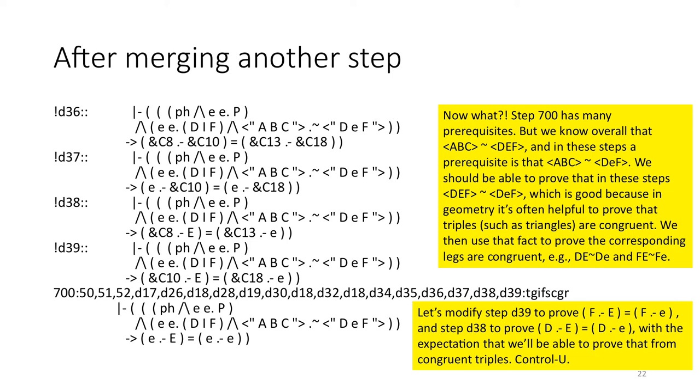700 has many prerequisites, but we know overall that ABC is congruent with DEF, and in these steps, a prerequisite is that ABC is congruent to D little eF. We should be able to prove that in these steps, DEF is congruent to D little eF, which is good because in geometry it's often helpful to prove that triples like triangles are congruent. We then use that fact to prove the corresponding legs are congruent, for example DE congruent to D little e, FE congruent to F little e. So let's modify step D39. We'll prove that FE is equal to F little e, and step 38 to prove DE is equal to D little e, with the expectation that we'll be able to prove that from congruent triangles. CTRL-U.